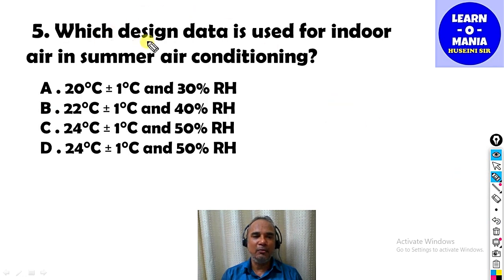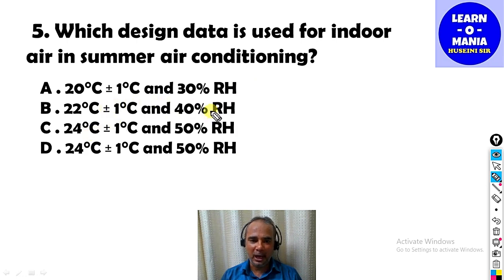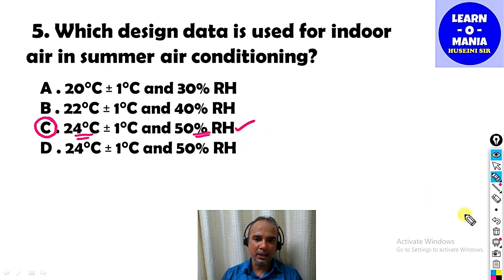Which design data is used for indoor air in summer air conditioning? In summer air conditioning, which data should be followed for indoor air? Temperature and humidity are shown. The correct answer is option C — the temperature should be around 24 degrees Celsius and relative humidity around 50%.